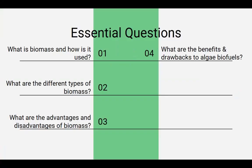Let's look at our essential questions. Number one: what is biomass and how is it used? Number two: what are the different types of biomass? Number three: what are the advantages and disadvantages of biomass? And then we want to look at a special segment of the market that's growing right now — algae. So what are the benefits and drawbacks of algae fuels?